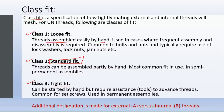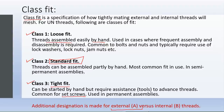The third class is the tight fit. This can be started by hand but requires assistance — for example, a spanner — to advance the threads and secure the assembly. It is very common for set screws. Set screws are used mostly in gears and pulleys to stop relative motion between two rotating components. They are used in permanent assemblies where parts are not intended to be removed once assembled. The letter A is used for external threads such as screws and bolts, and the letter B is used for internal threads such as a threaded hole depth.